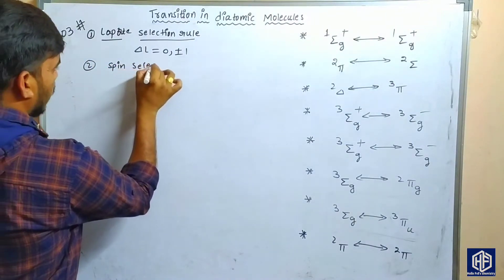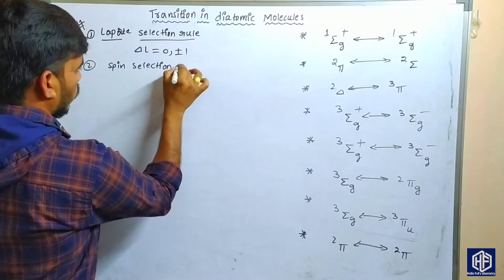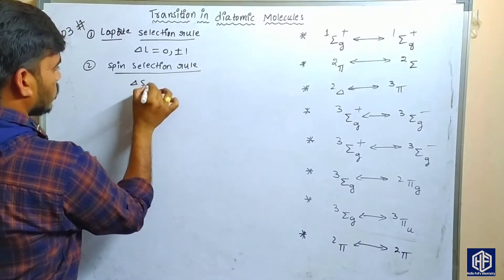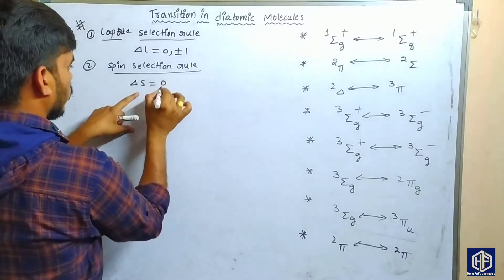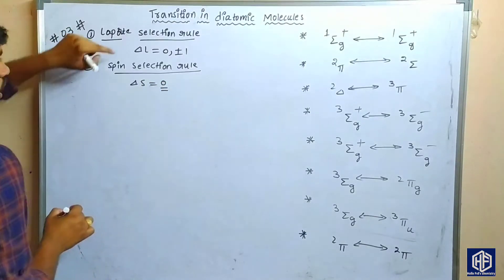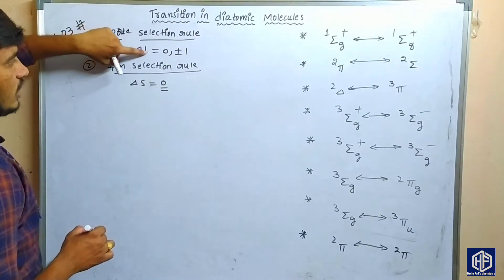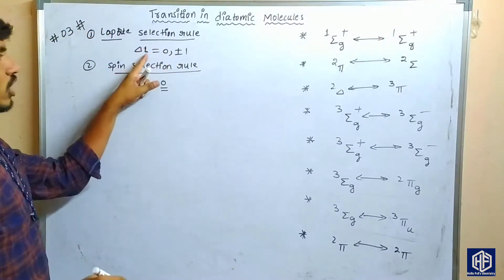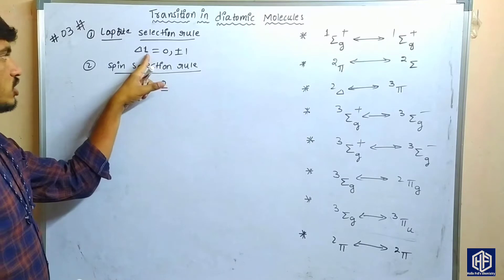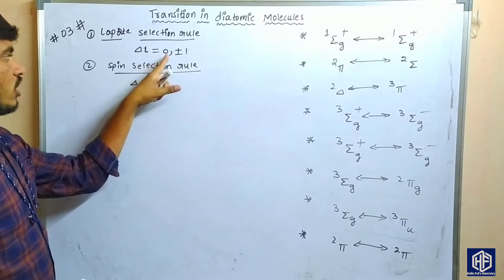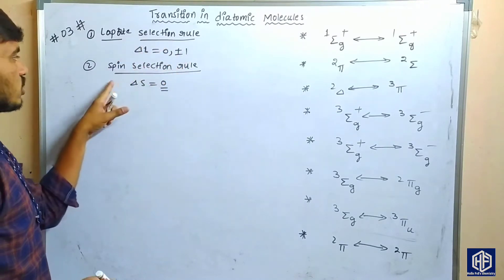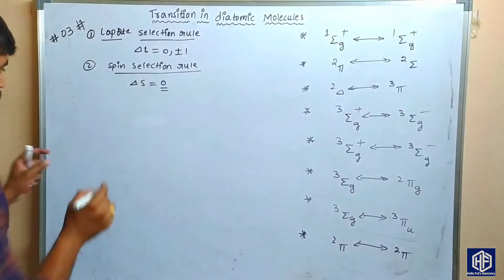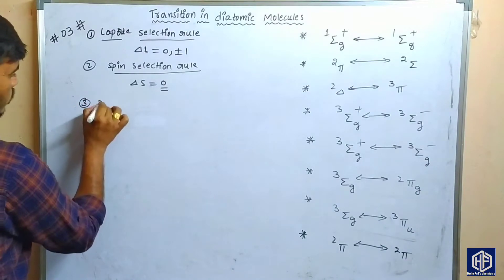The second rule is the spin selection rule. The spin selection rule states that the change in spin multiplicity value is zero. This means the change in spin angular momentum value is zero. Delta S is equal to zero — that is called the spin selection rule.